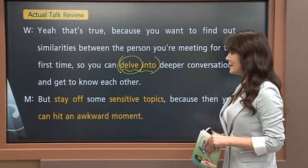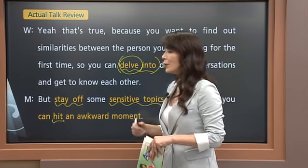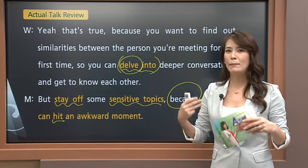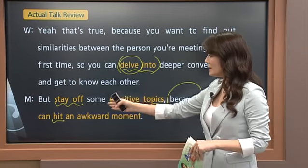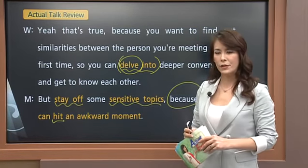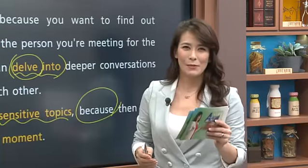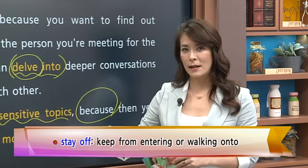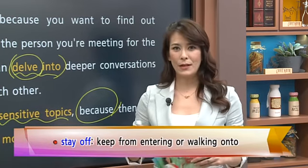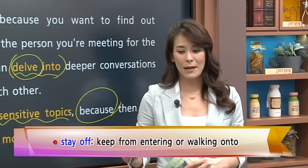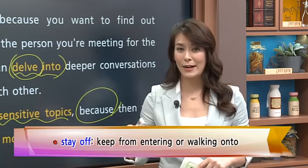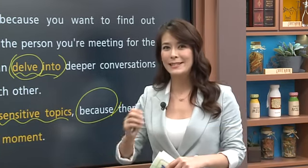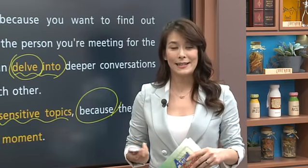Peter says 'but stay off some sensitive topics' — giving some advice. Stay off. He's saying stay away from talking about sensitive things, sensitive topics. Rachel gives an example: sensitive topics you should stay off are things like religion and politics. He says absolutely. Now, 'stay off' means do not enter. For example: 'Stay off my property' means do not come onto my property, do not enter this area. Related vocabulary: keep off, stay away from something. They're all very similar.